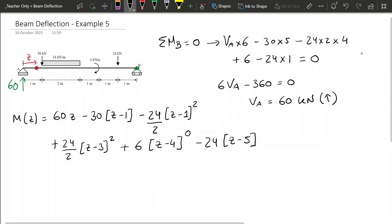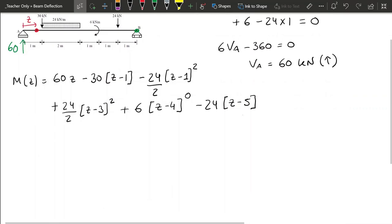So now, once we get this moment equation, we just follow the principles that we have been working with. So we establish that then the curvatures are going to be minus the moment divided by EI. So what we're going to get is 1 over EI, and then I'm just going to copy this expression, but changing the signs.